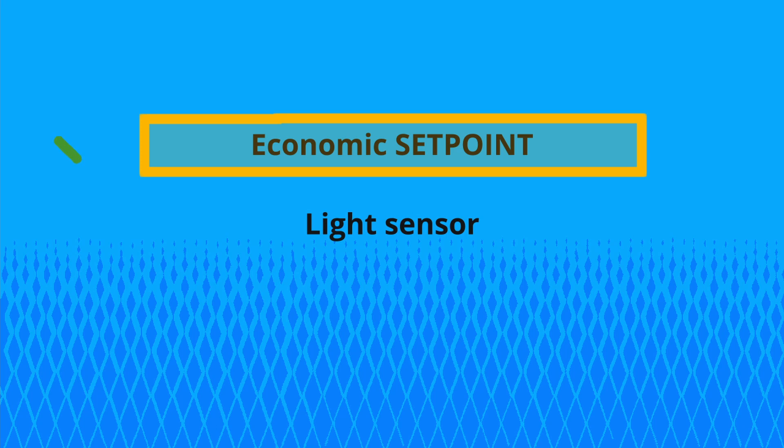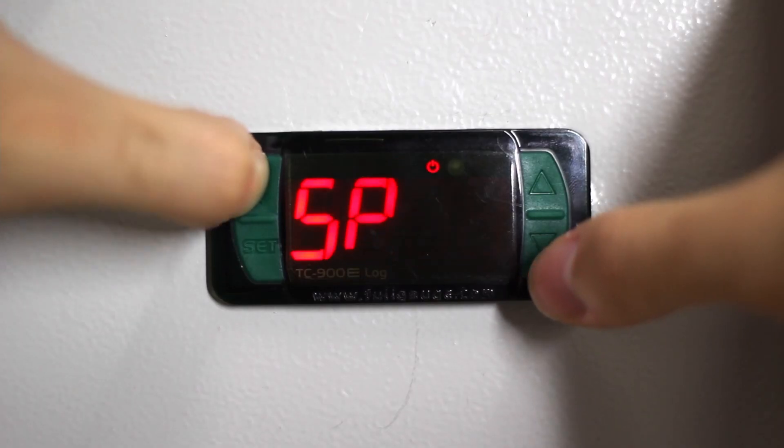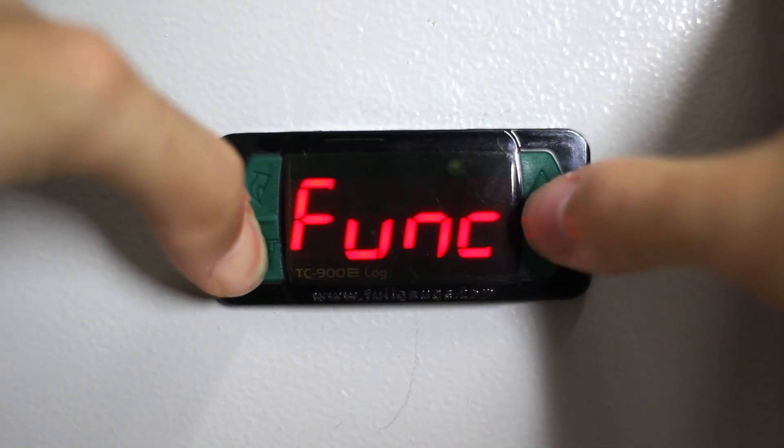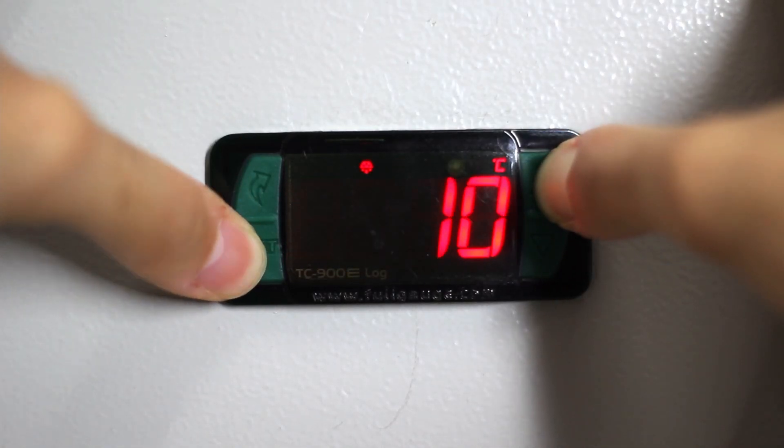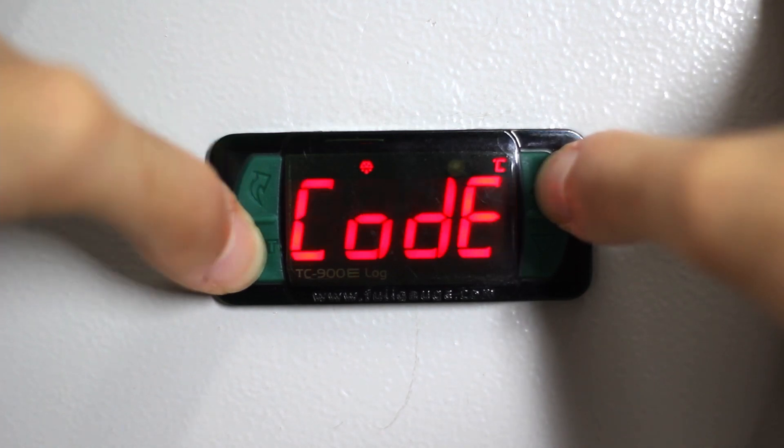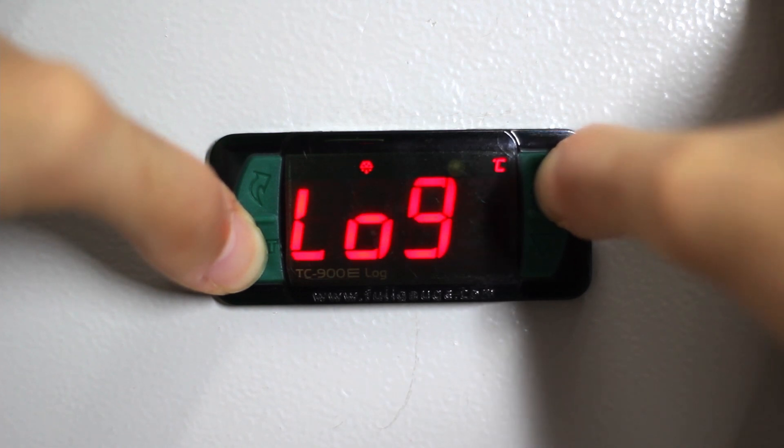Having economy set point activated, we must enable the light sensor. Pressing the top left key, find FUNC option and enter again the access code 123. Use up or down arrows and find the Lumi feature display, then press SET.